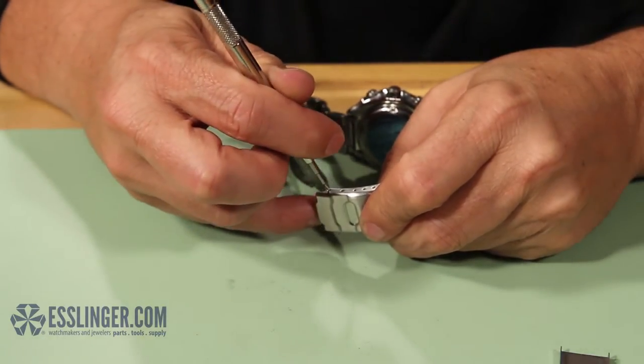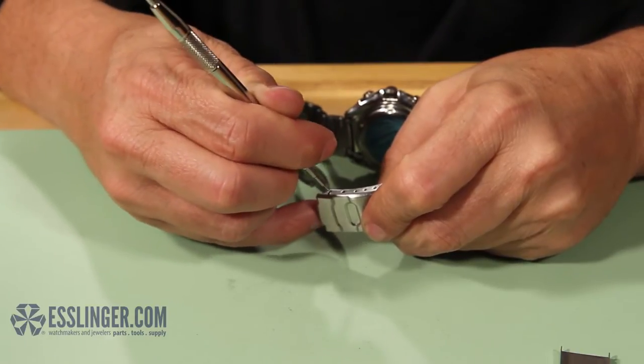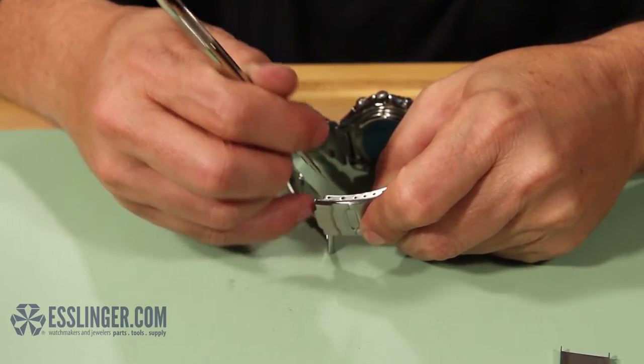Press down on the spring bar with your tool until it is out of the hole and then push it out from under the clasp.